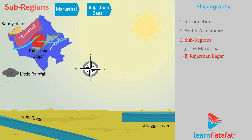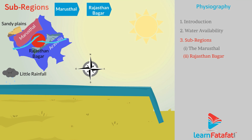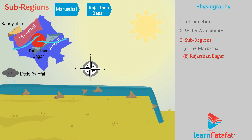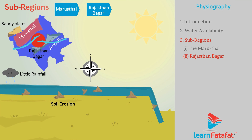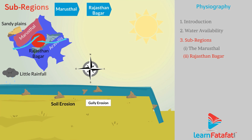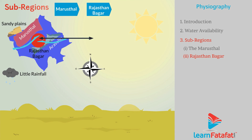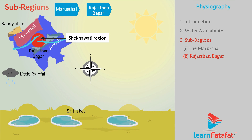The land looks like the sides of the sea. The Luni river, flowing through the south-eastern part of the region, carries soil particles along with it and hence causes soil erosion. Such type of erosion caused due to flowing water is called gully erosion. The northern part is known as the Shekhawati region and it has many salt lakes.